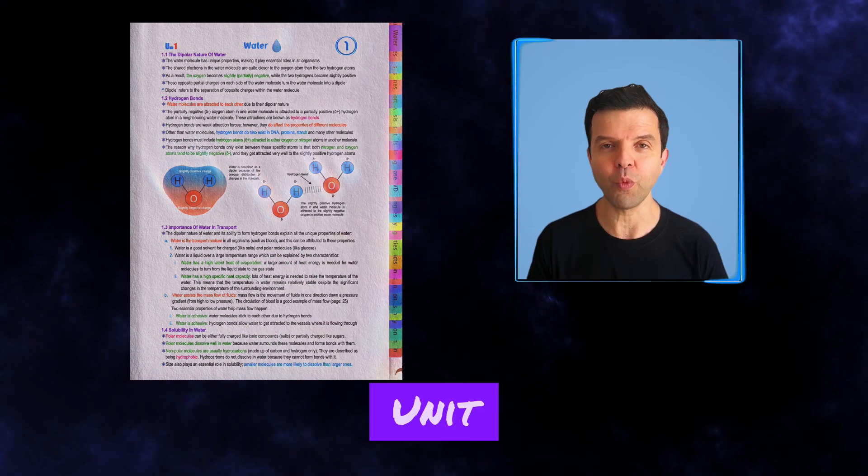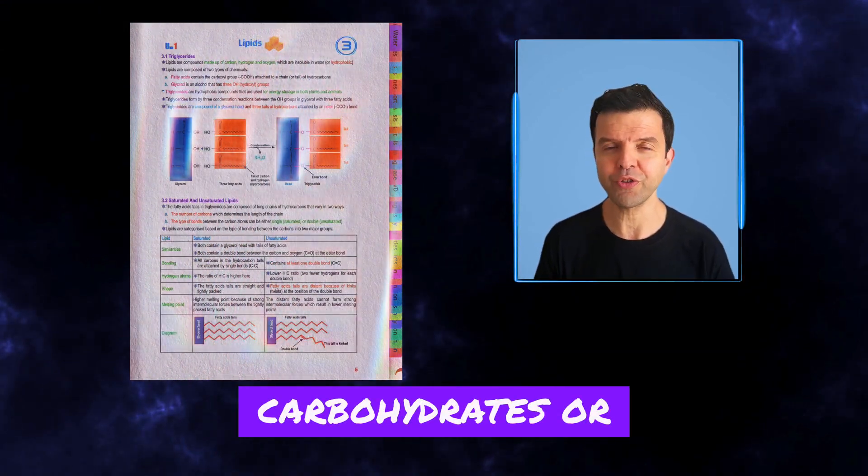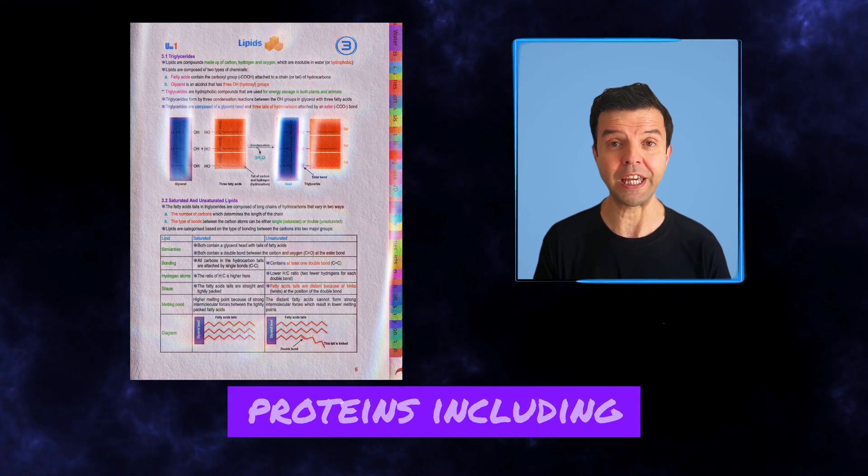The first block of Unit 1 is called Biological Molecules. It talks about water, carbohydrates or sugars, lipids and proteins, including enzymes.